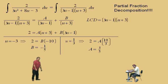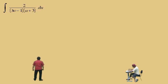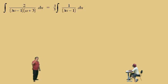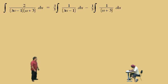We've finally got our A and B. Now we can take our integral and decompose our rational function into two separate fractions and hopefully integrate. We had A over 3u minus 1. A was three-fifths, so we take three-fifths out as a constant and write the integral of 1 over 3u minus 1. For the B term, B was negative one-fifth, so we take one-fifth out as a constant and have the integral of 1 over u plus 3 du.